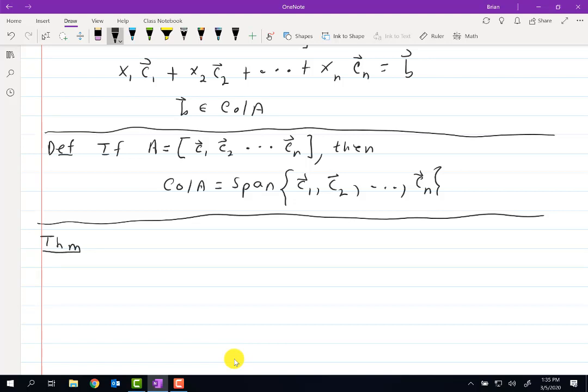The theorem looks like this: column space of A is a subspace of R^m. And that was, let me do this. I'll say A is an m by n matrix. I just want to remind you of that. So the m tells us the number of rows that each of these things has to have. Of course, n is the number of columns. So column space of A is a subspace of R^m.